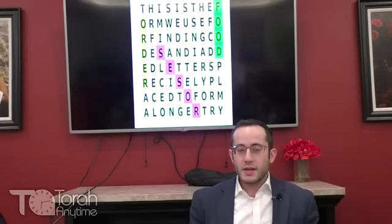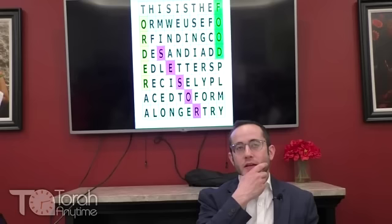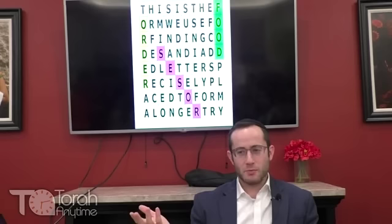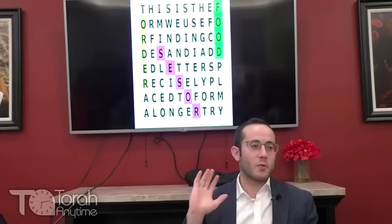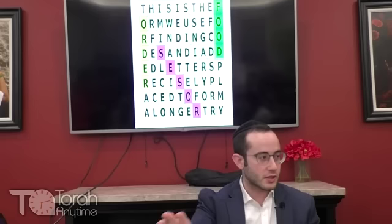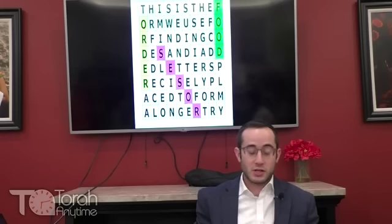Imagine you are a spy and you want to send a message to your motherland. In the olden days, if you want to send a letter, you can't just say straight out where the nukes are — they'll intercept it. So what you can do is hide a message through codes.